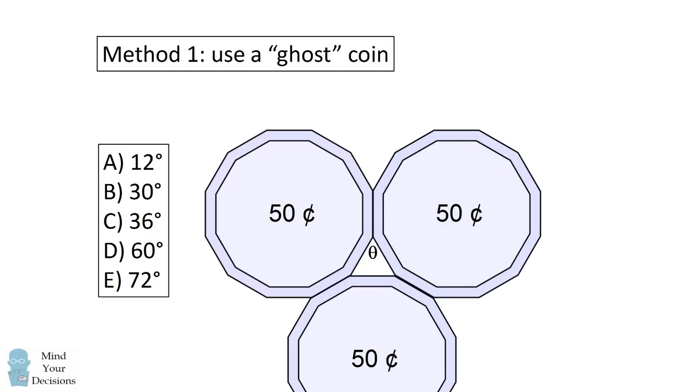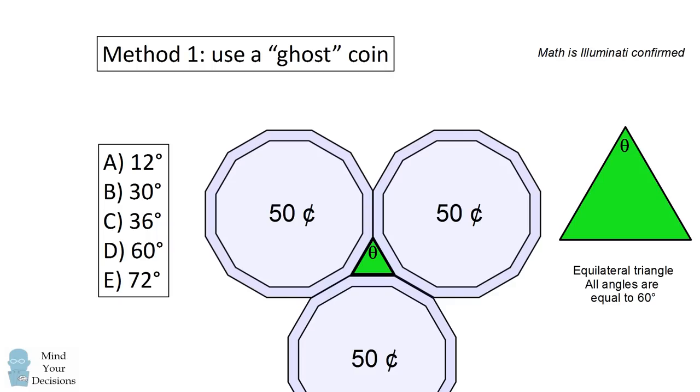And you'll see that in the center is a triangle formed by three of the sides of the three coins. So this triangle has all of its sides equal to each other. And therefore it's an equilateral triangle, and each of its angles are 60 degrees. Therefore we can conclude the answer is 60 degrees.